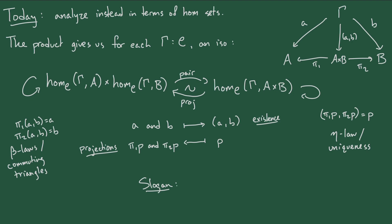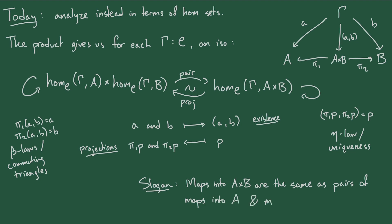So if we pause here, we can distill all of this into the following slogan: maps into A times B are the same as — or isomorphic to — pairs of maps into A and maps into B. The punchline of this video will be that you can actually take this as the definition of the product if you phrase it in the right way.